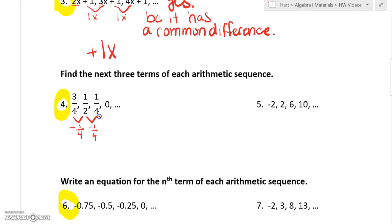Then here one-half to one-fourth, that's subtracting one-fourth. So to find the next one we need to subtract one-fourth again. Zero minus one-fourth would be negative one-fourth. Then subtract another one-fourth, that would give us negative one-half. And then one more time we do minus one-fourth and we get negative three-fourths.